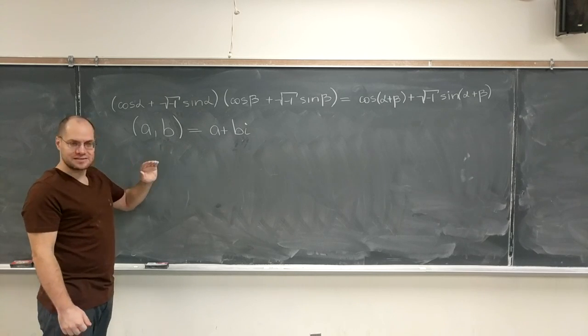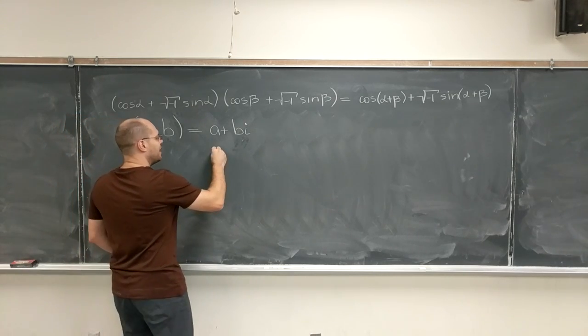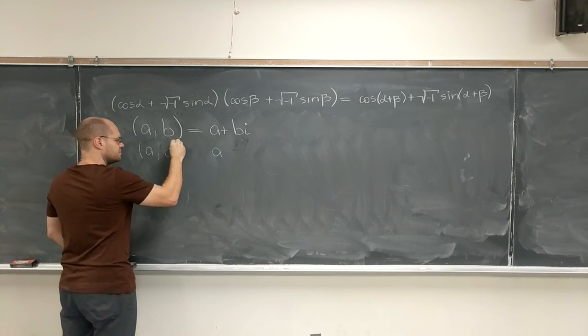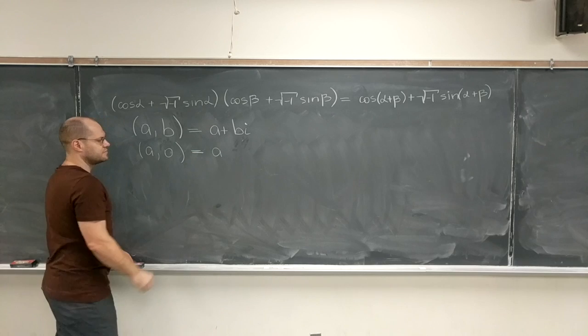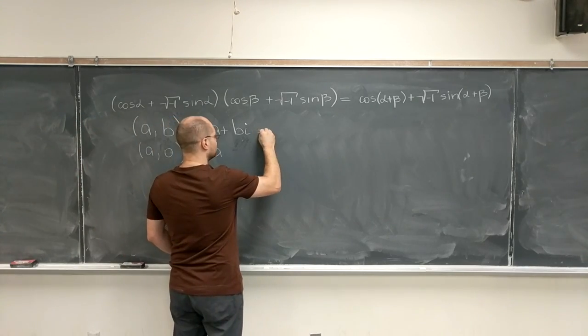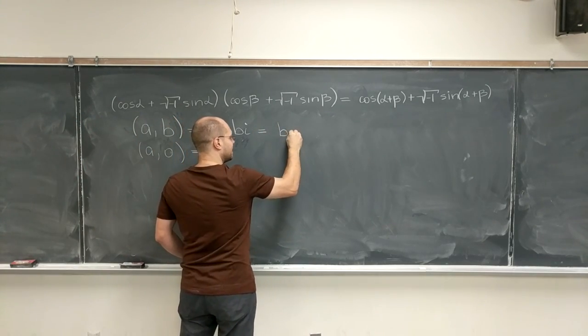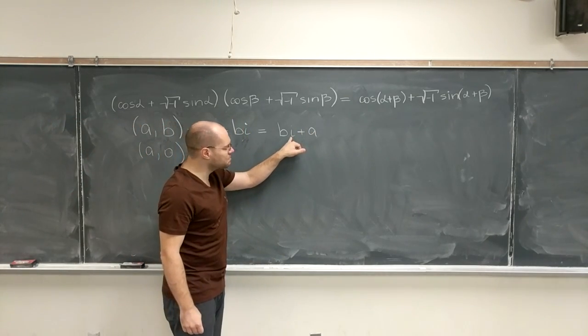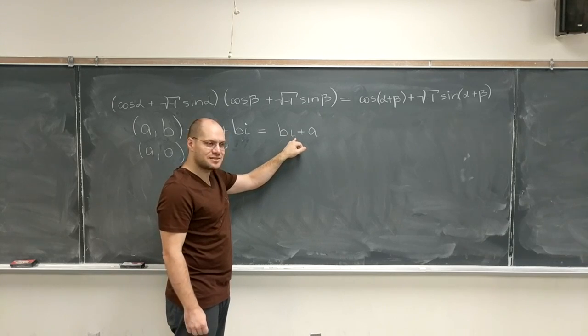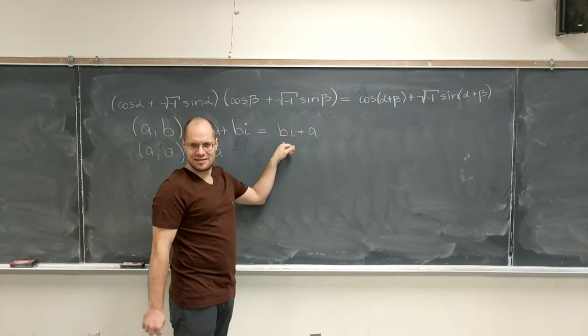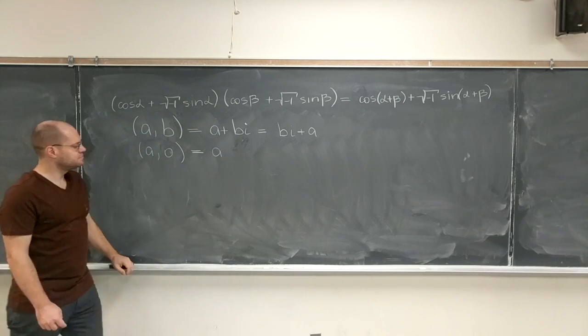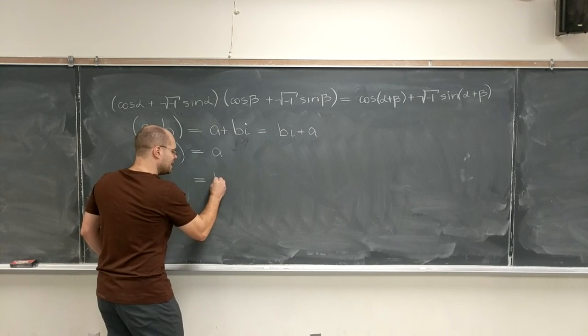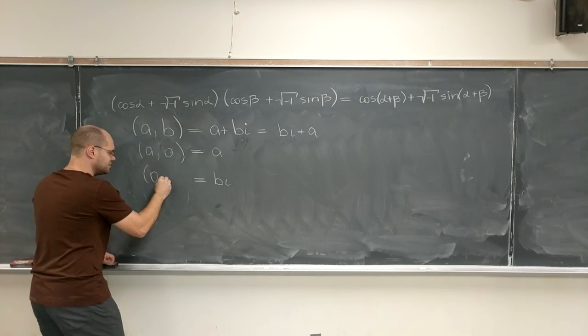The symbol i serves a number of very important functions. Number one, it's the placeholder. It tells us that whatever it multiplies is the second number in the pair. And it gives us the flexibility to write a when we mean (a, 0).